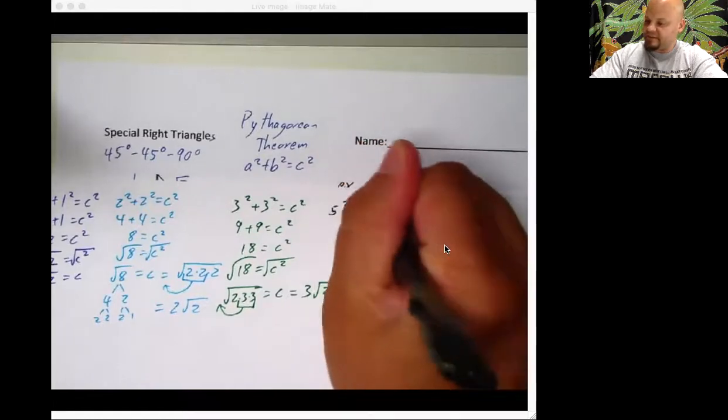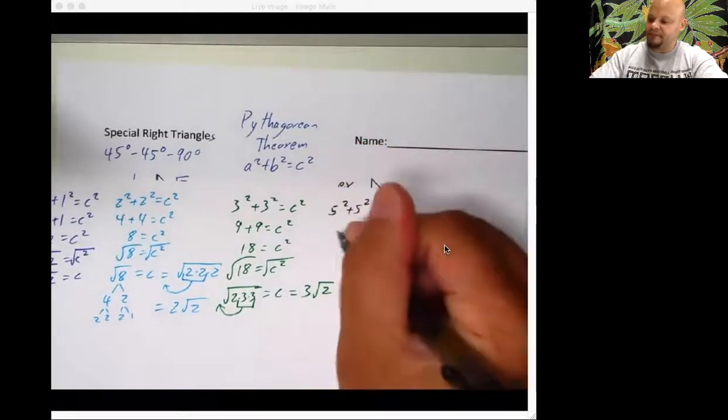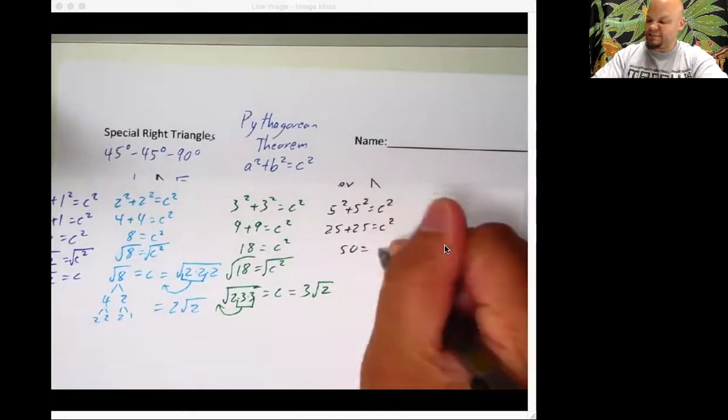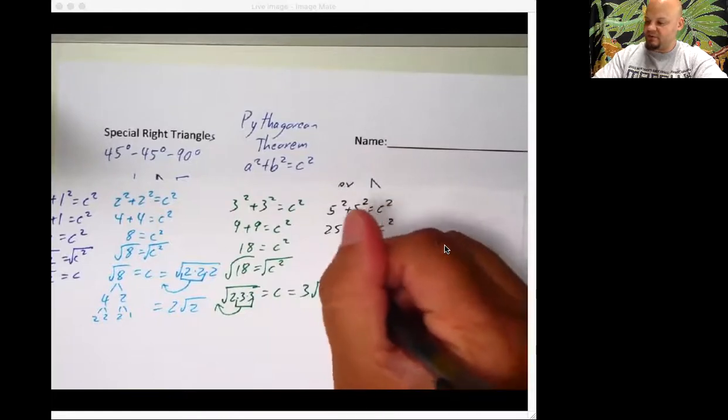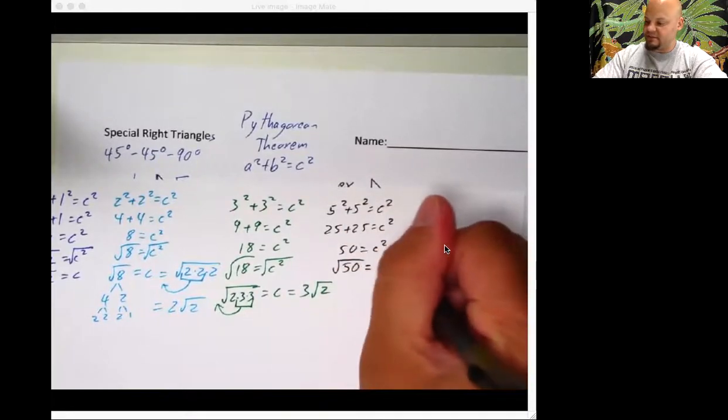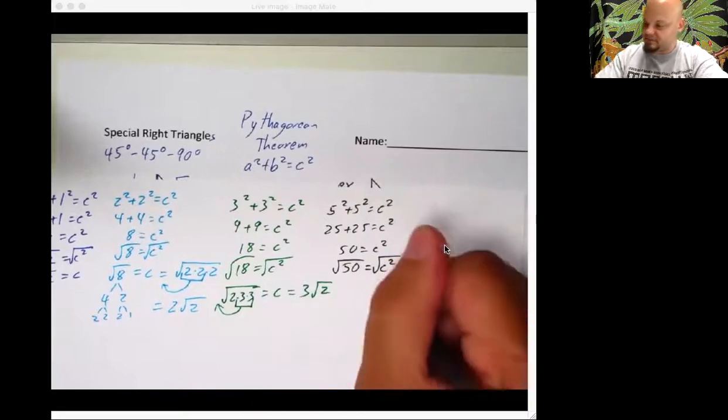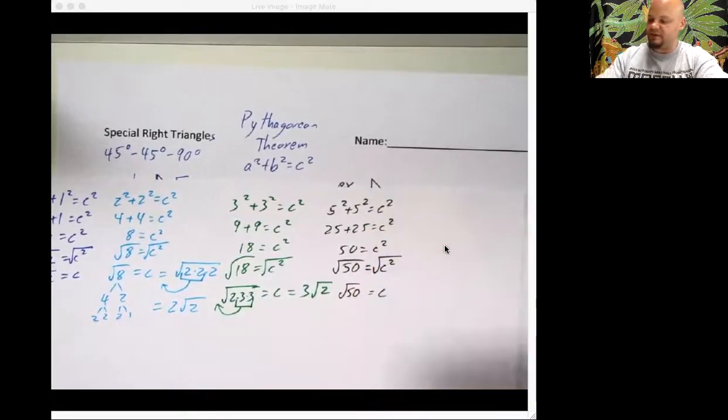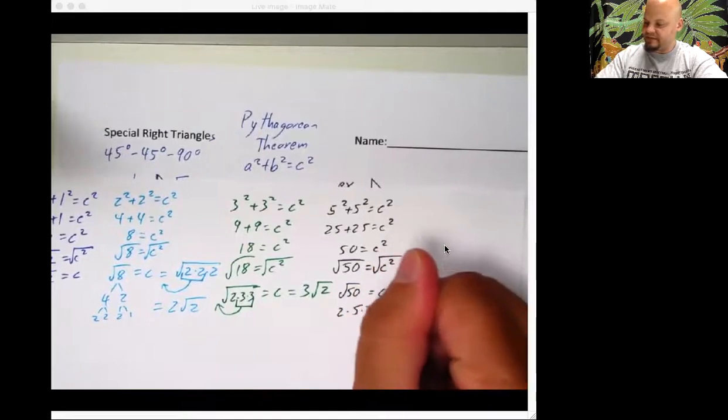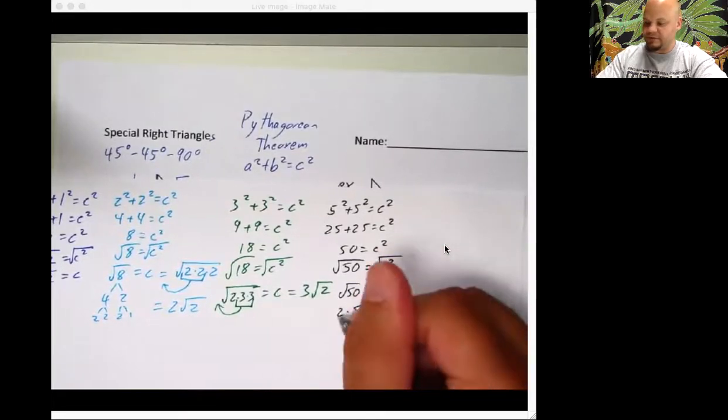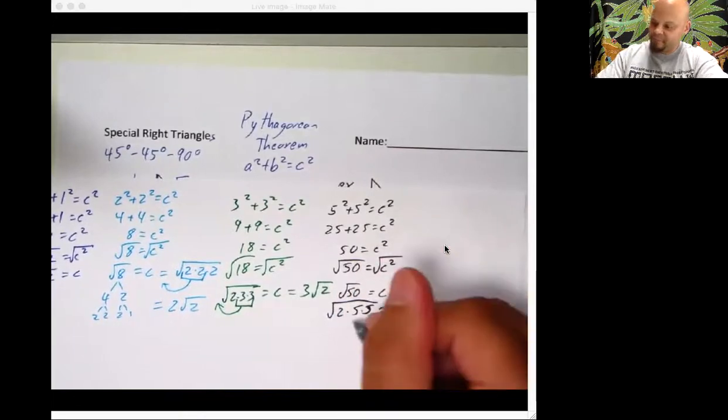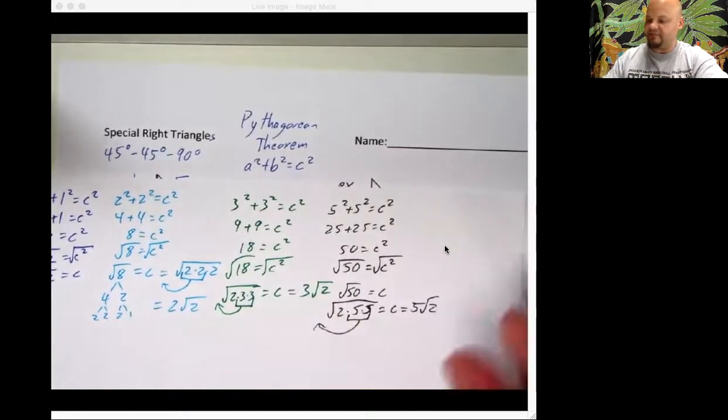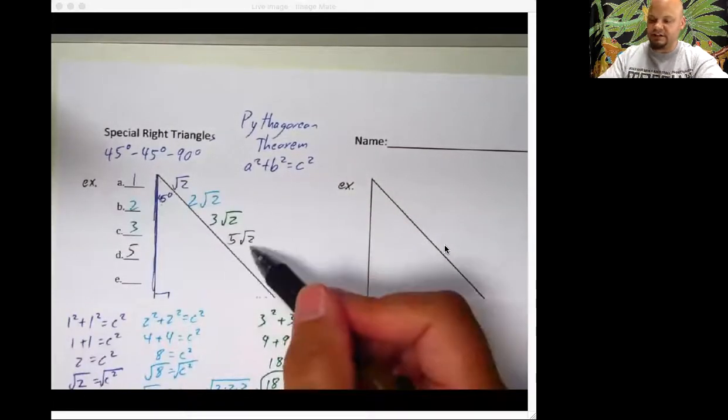Five squared plus five squared is equal to C squared. 25 plus 25 is equal to C squared. 50 is equal to C squared. That would mean the square root of 50 is equal to the square root of C squared, which is just C. So C is equal to root 50. But root 50 is really two times five times five. 25 times two makes 50. You know what I'm talking about? These two fives, one's going to get out. Oh my goodness. Five root two, just like I told you.